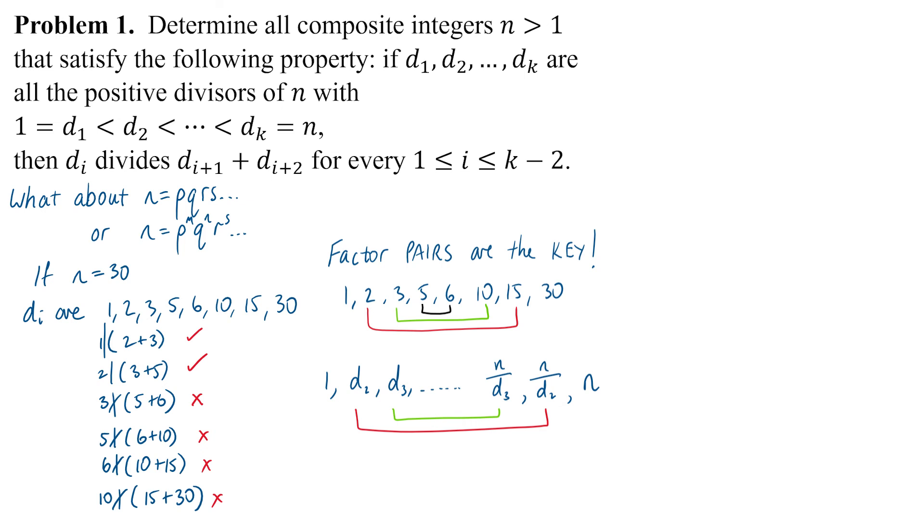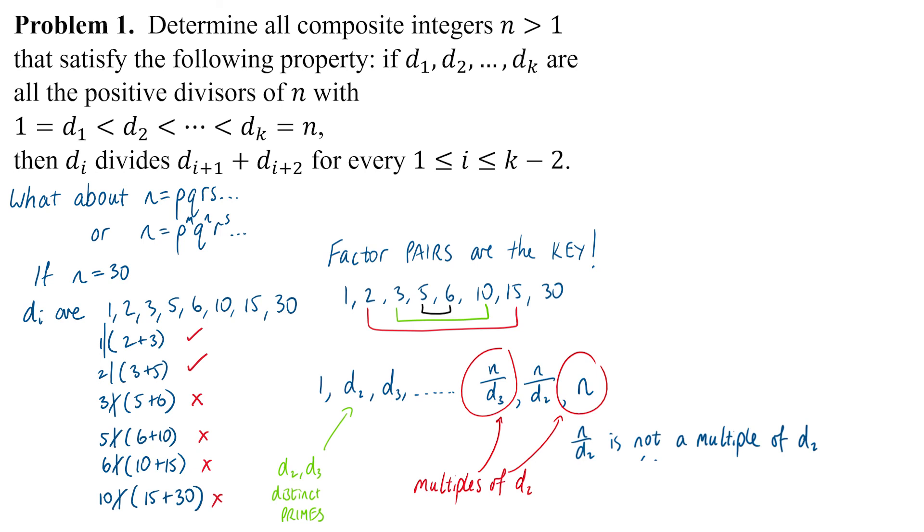If D₂ and D₃ are distinct primes, we're going to have that issue where D₂, that smallest prime, does divide into n and it does divide into n over D₃. But because it does not divide into n over D₂, it's been cancelled out.